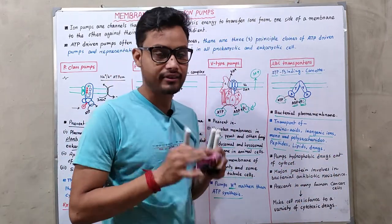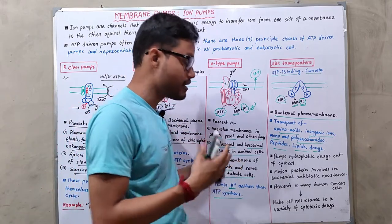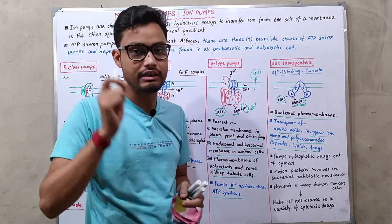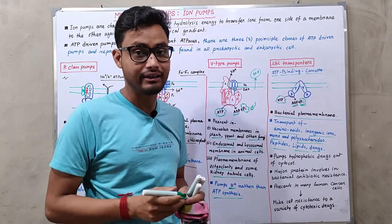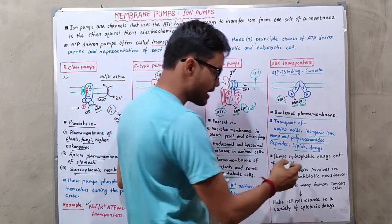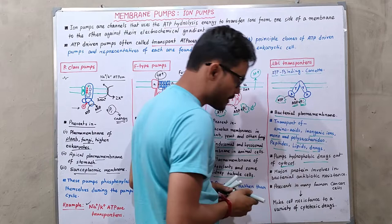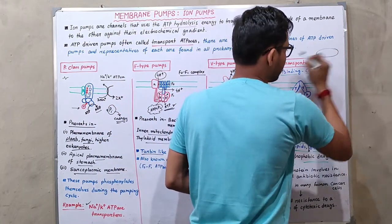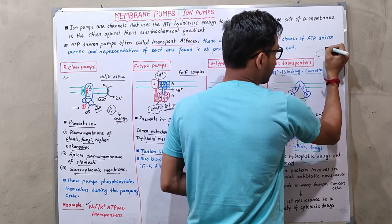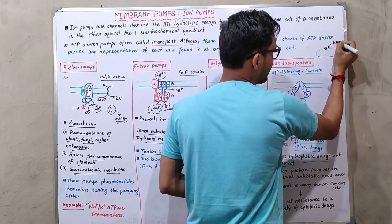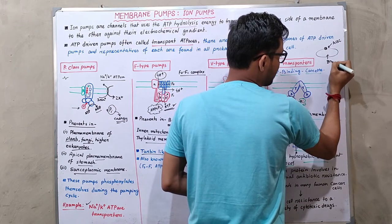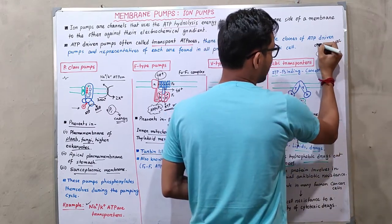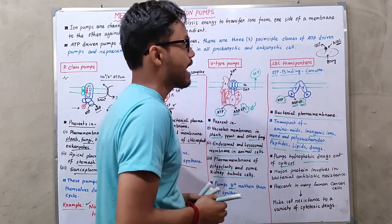In bacteria, ABC transporters are present in the cell membrane and pump hydrophobic drugs from the cytosol to the outside. When we introduce an antibiotic drug into a bacterium that has ABC transporters, the transporters pump those drugs out of the bacterial cytosol to the exterior, thereby conferring antibiotic resistance to the bacteria.